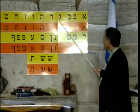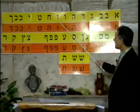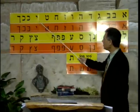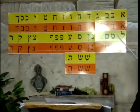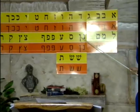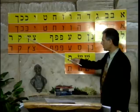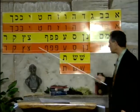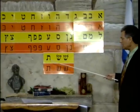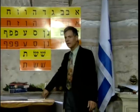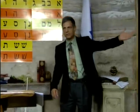Aleph, Bet, Gimel, Dalet, He, Vav, Zayin, Het, Tet, Yud, Kaf, Lamed, Mem, Nun, Samech, Ayin, Pe, Tzadik, Kuf, Resh, Shin, and Tav. Those are the 22 Hebrew letters.